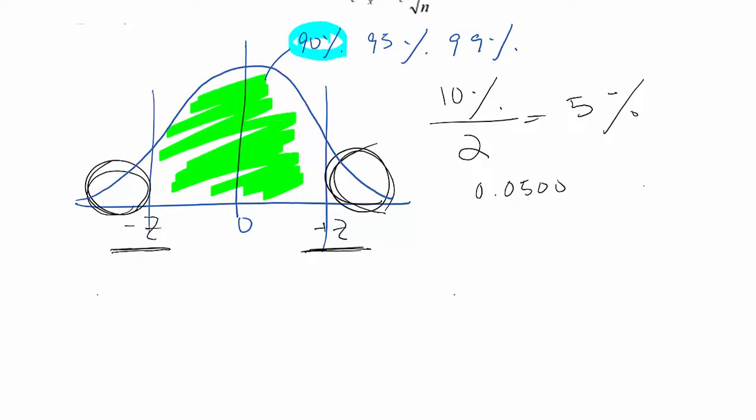You find corresponding z-scores, then it becomes negative 1.64 and negative 1.65. Negative 1.64 has 0.0505 and then negative 1.65 equals 0.0495.